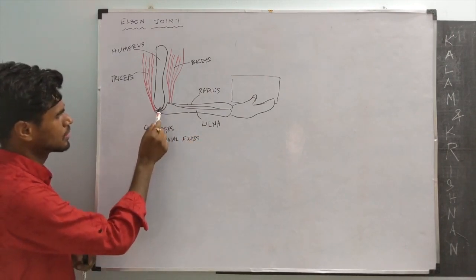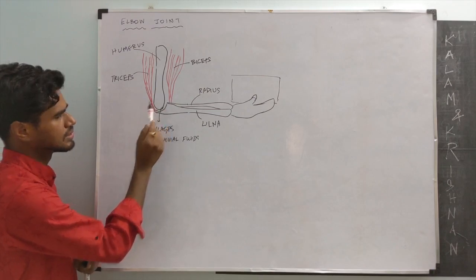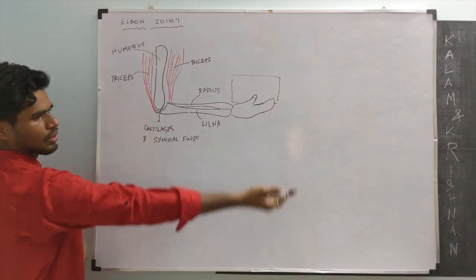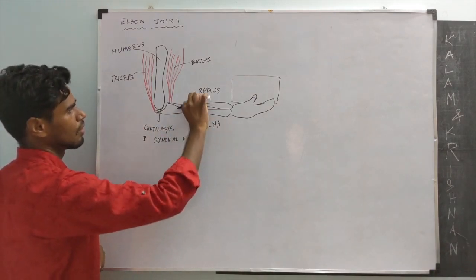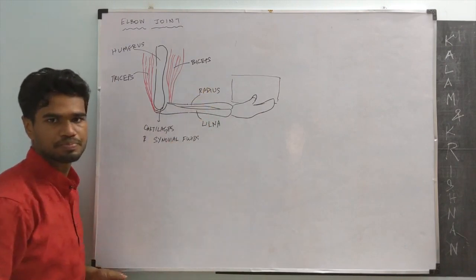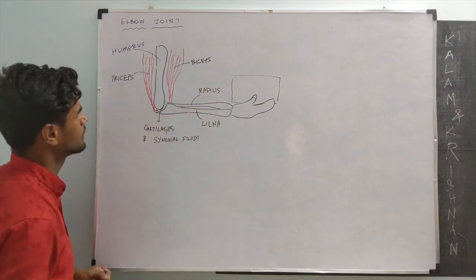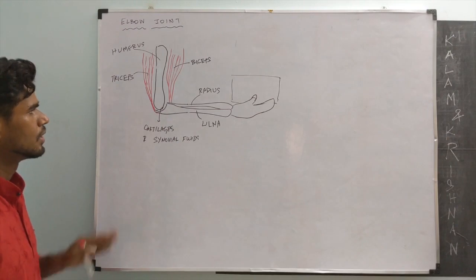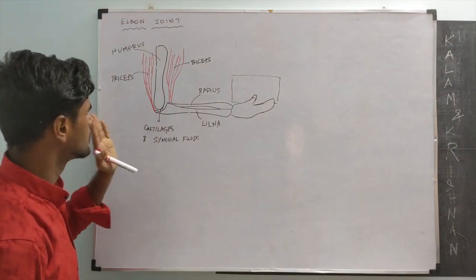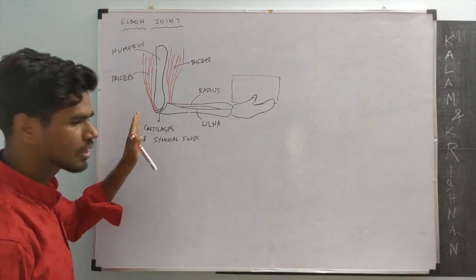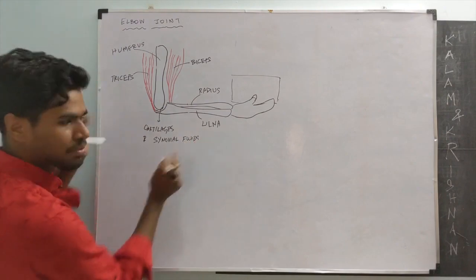Because of this, this joint allows rotation of this part of the arm. That's a function of an elbow joint. Now, let's look at the mechanical approximation of this biological system.